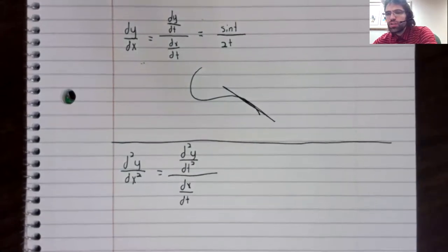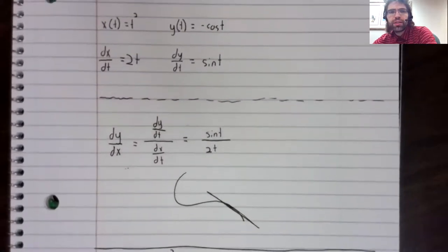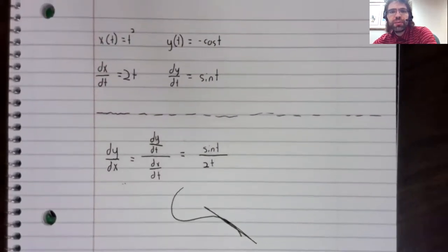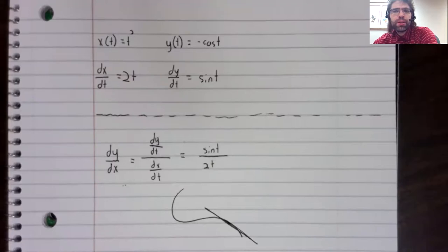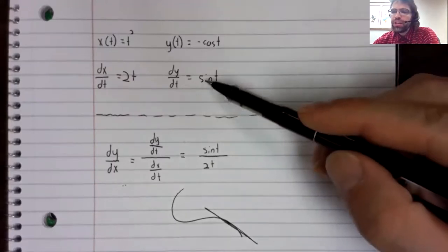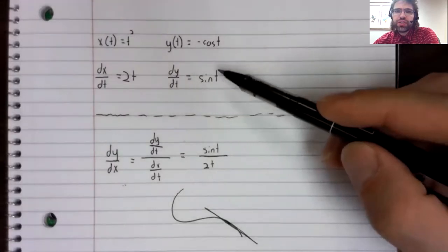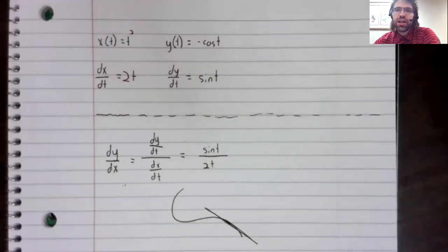So going back to this example, if we wanted the second derivative, we'd differentiate this a second time.